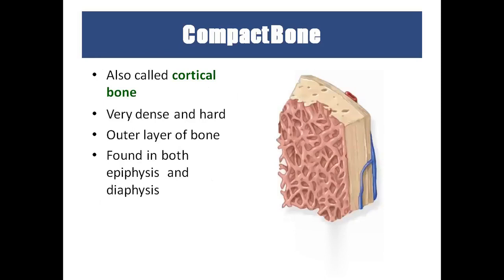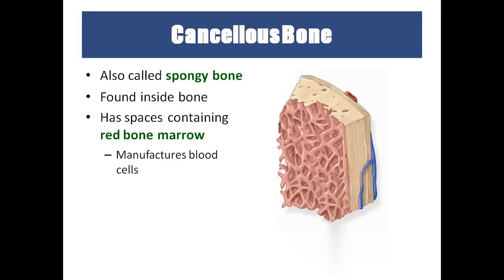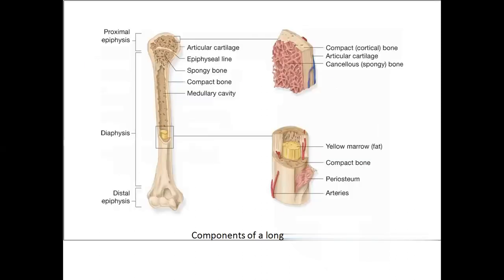The outer bone is called the cortical bone — it is very dense and hard, found in both the epiphysis and diaphysis. Inside the bone is the cancellous or spongy bone, which contains red bone marrow. The red bone marrow manufactures blood cells — RBCs, WBCs, and platelets.